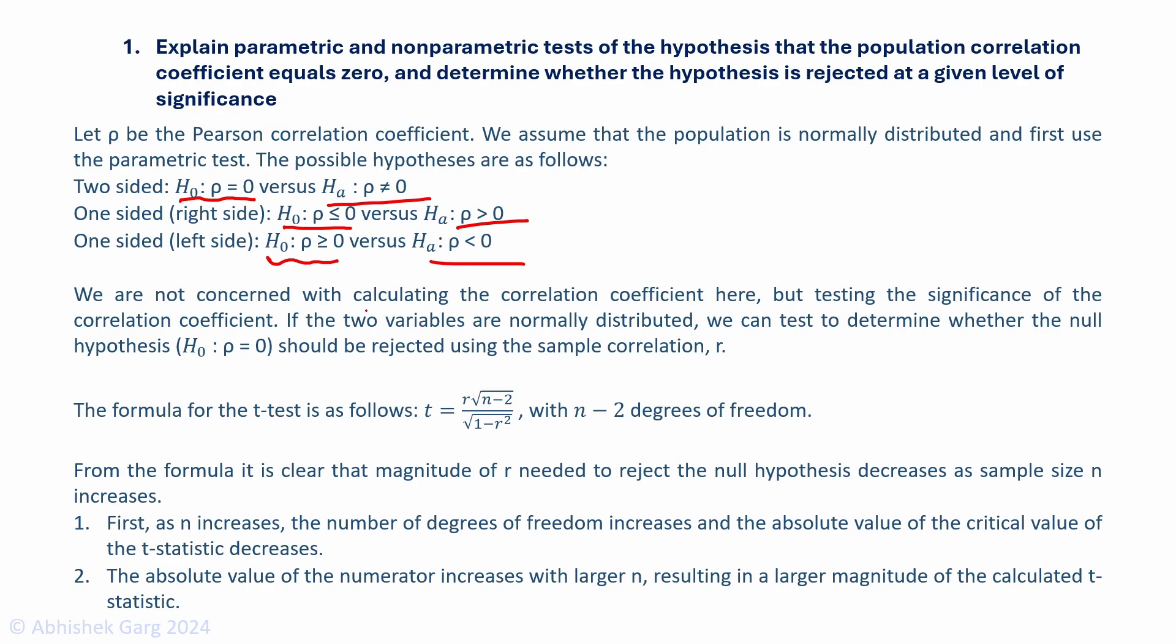We are not concerned with calculating the correlation coefficient here, but testing the significance of the correlation coefficient. If the two variables are normally distributed, we can test to determine whether the null hypothesis should be rejected using the sample correlation r. The formula for the t-test is t = r√(n-2) / √(1-r²) with n-2 degrees of freedom. The magnitude of r needed to reject the null hypothesis decreases as sample size n increases because the t-stat is directly proportional to r and n.